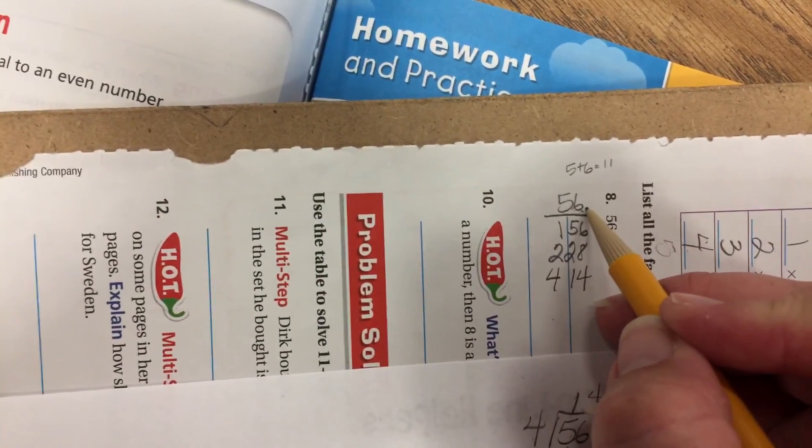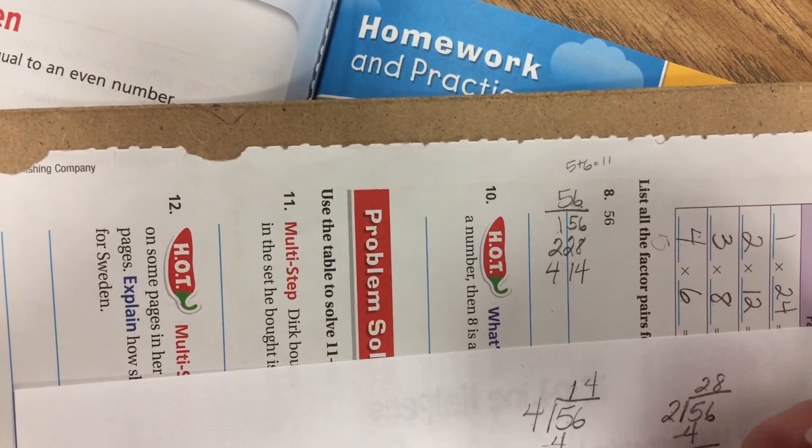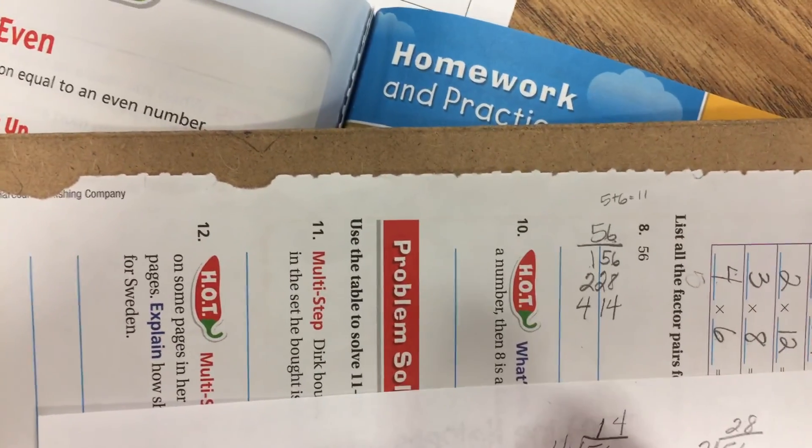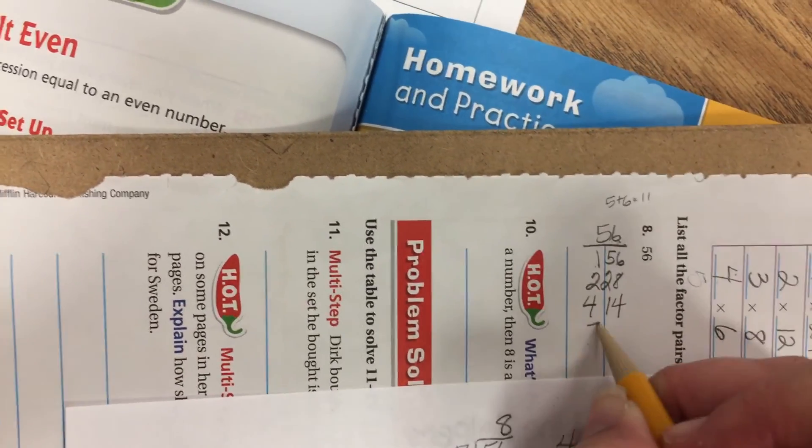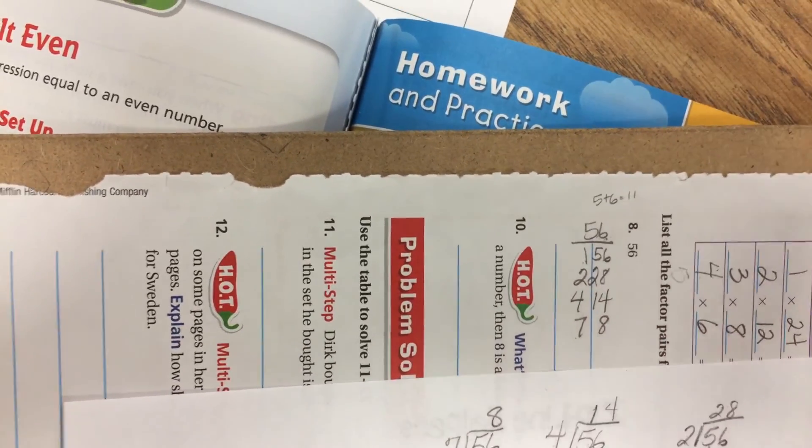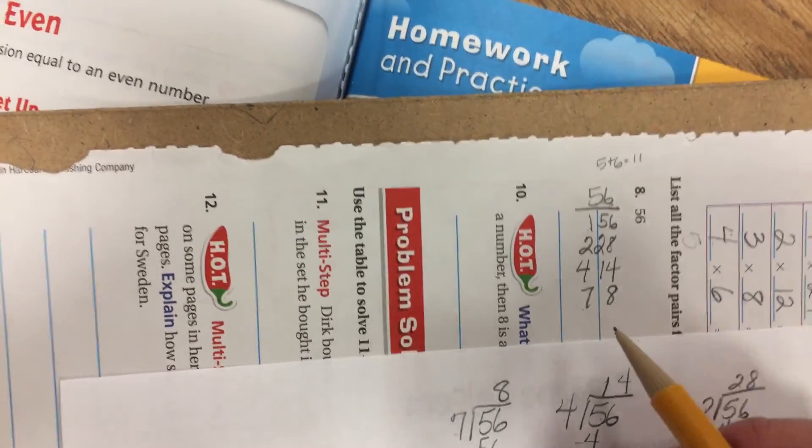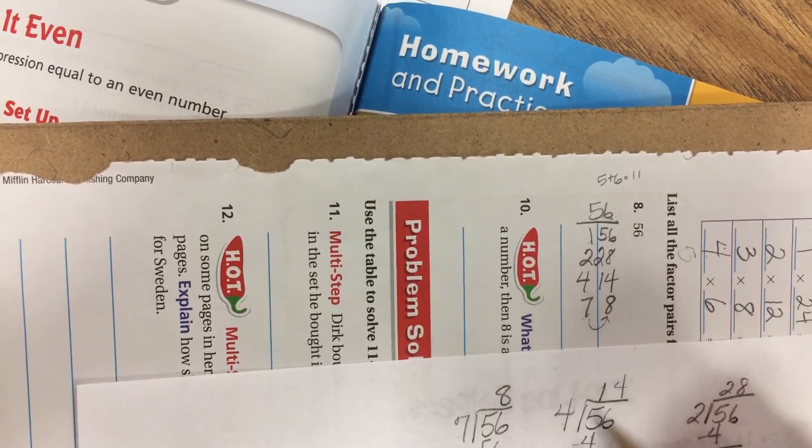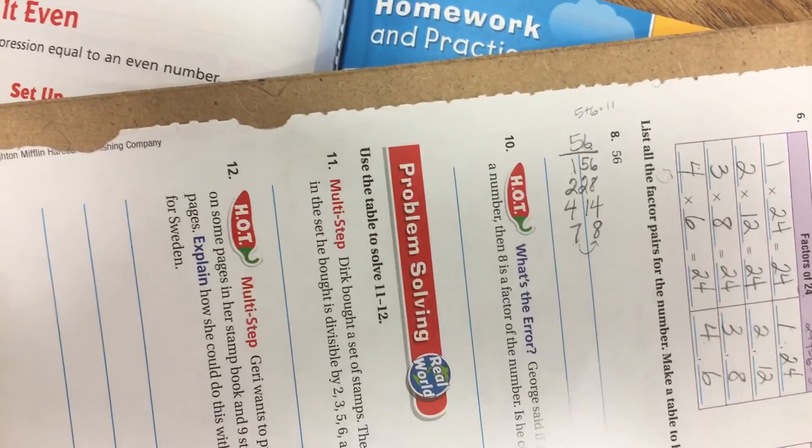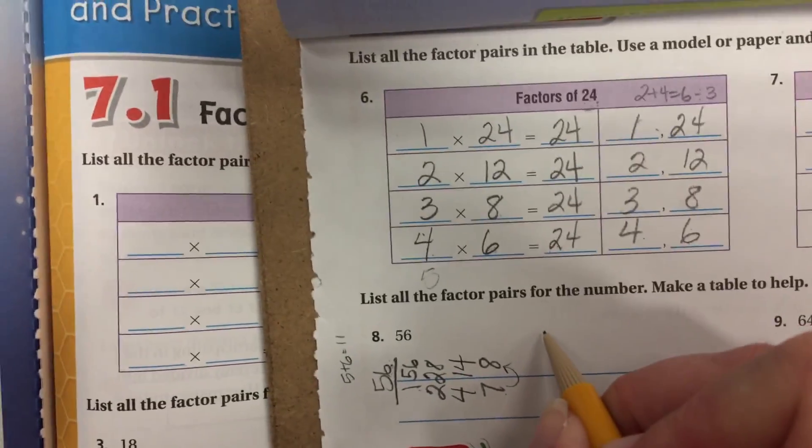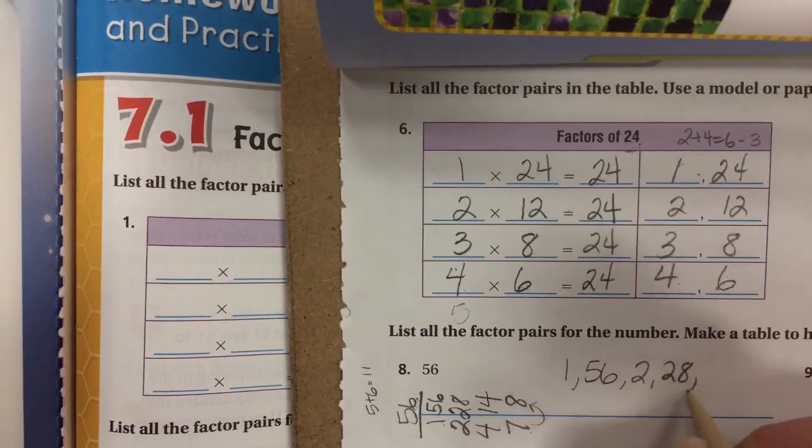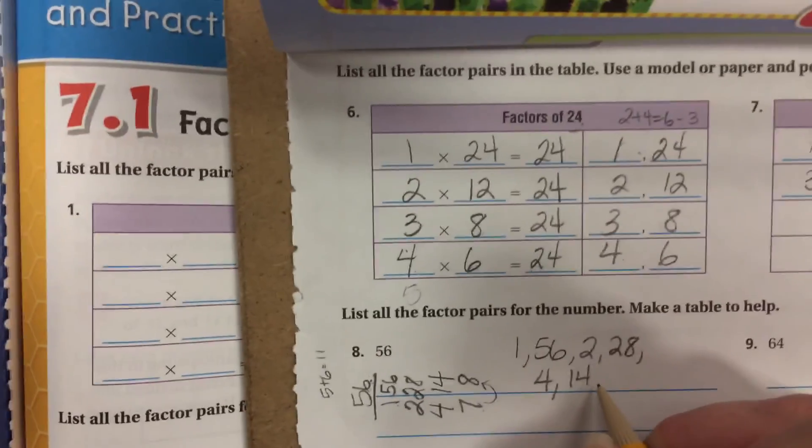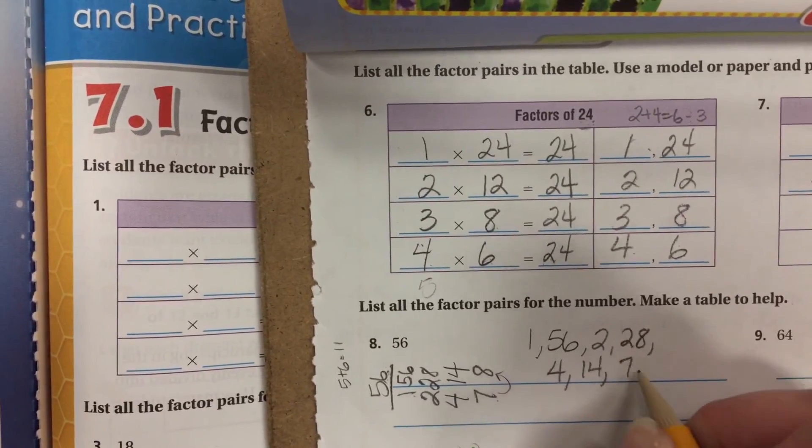5? Nope. 6? Well, 6 go in there. No, because I don't have 2 and 3. Well, 7? I don't know. 7. Oh, look! 7 times 8. So 7 and 8. And guess what? Right here, I'm done. Why? Because what comes after 7? 8. And it's there. So now I'm done. So then I'm going to turn my paper back. And I'm going to list my factor pairs. 1, 56. 2, 28. 4, 14. 7 and 8.